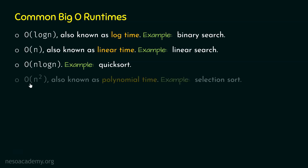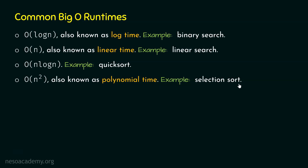The fourth common big O runtime is O(N²), also known as polynomial time, because as the size of the input increases, the growth rate is polynomial. The example algorithm is selection sort, which is also a sorting algorithm just like quick sort, and the time it takes is O(N²).